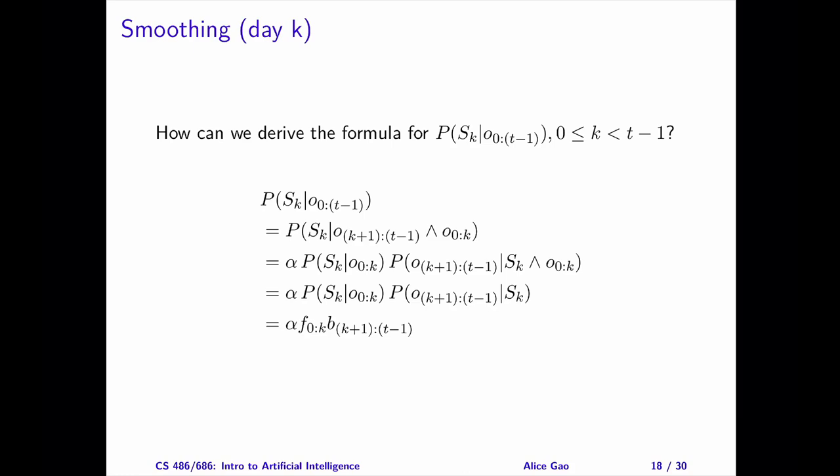For each step, please try to choose a justification yourself first. You will have five options as before: base rule, rewriting the expression, the chain rule or the product rule, the Markov assumption, and the sum rule.